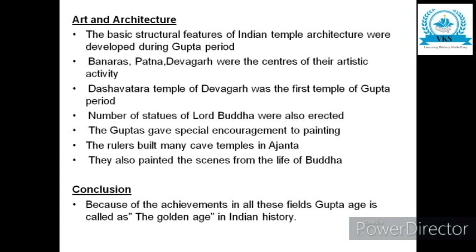The last subheading is Art and Architecture. The basic structural features of Indian temple architecture were developed during the Gupta period. Banaras, Patna, and Devagiri were centers of artistic activity. The Dashavatara temple of Devagiri was the first temple of the Gupta period. A number of statues of Lord Buddha were also erected during this time. The Guptas gave special encouragement to painting and built many cave temples in Ajanta, painting scenes from the life of Buddha.